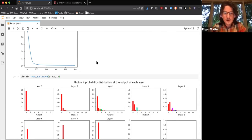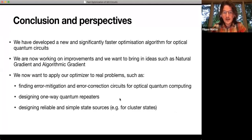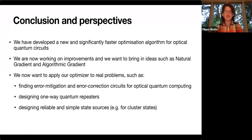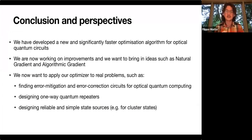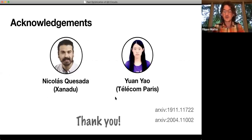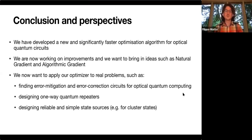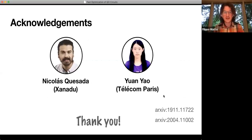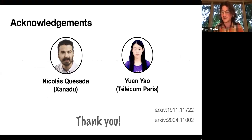In conclusion, we have developed a new and significantly faster optimization algorithm for photonic quantum circuits. We are working on improvements — for example, using the natural gradient and algorithmic gradient, which take into account the topology of the parameter space. We want to apply this optimizer to real problems: finding error mitigation and error correction circuits for optical quantum computing, designing repeaters, and designing reliable and simple quantum state sources. Thank you to my collaborators and thank you all for your attention.